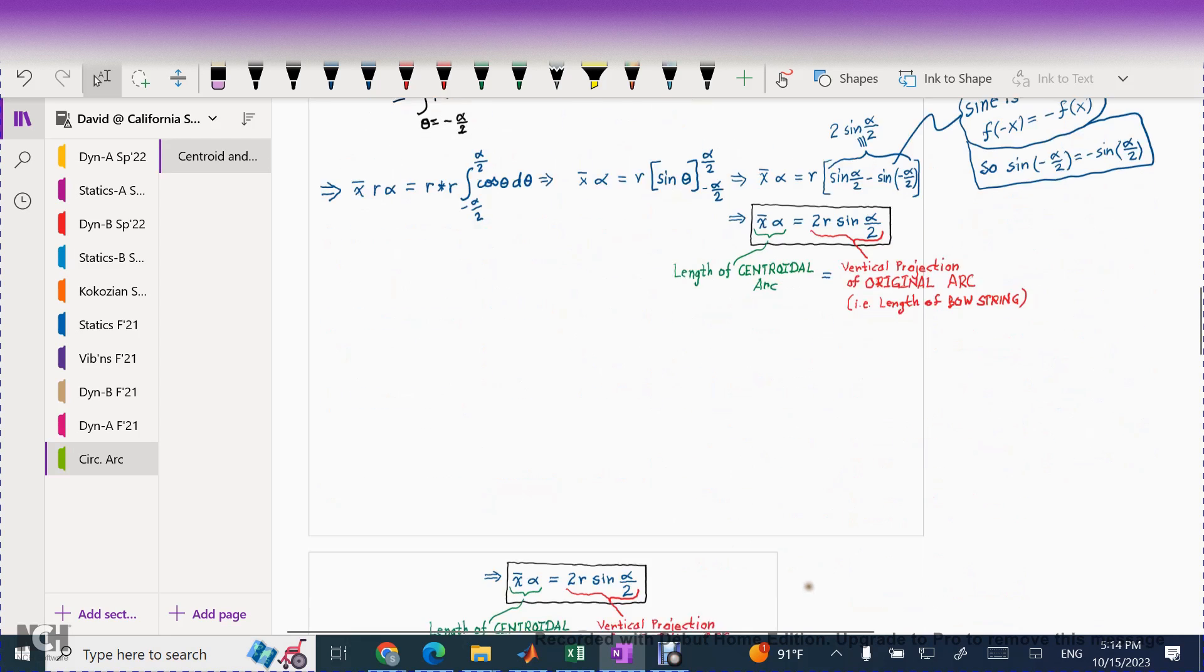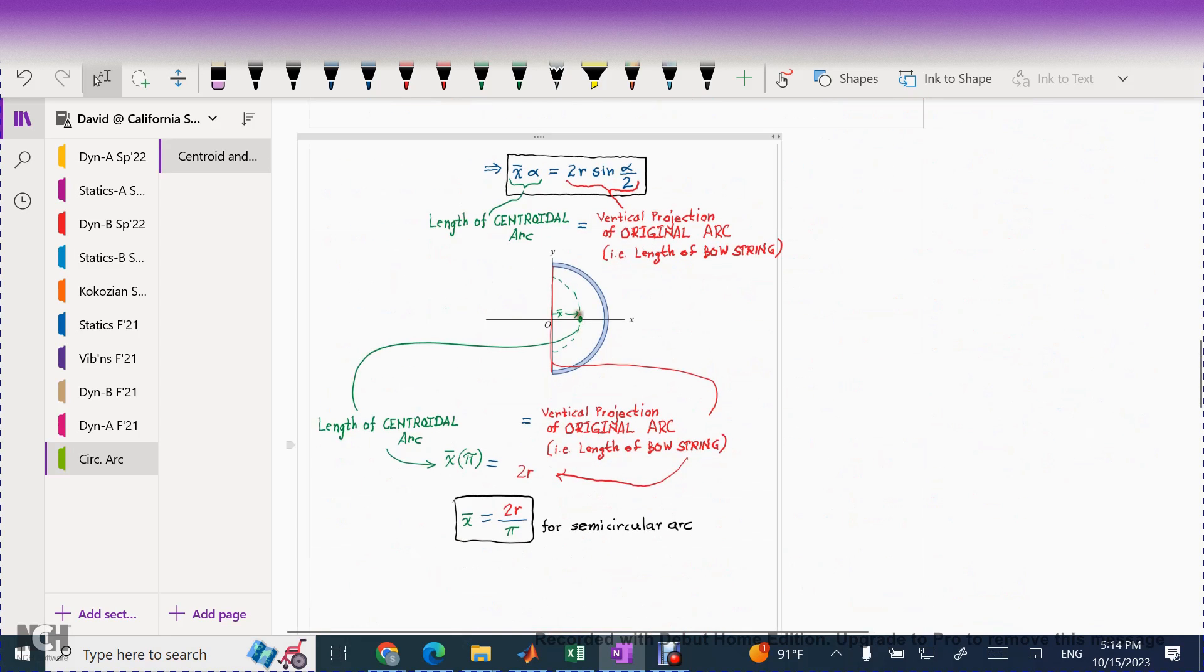Now, let's take that and apply it to a semicircular hoop portion. So if I take a semicircular hoop portion, then let's just go ahead and apply that same idea. The length of the centroidal arc is the x bar, which presumably I don't know at this stage, times the subtended angle, but I do know what angle is being subtended. For a semicircular hoop, it's pi, pi radians, right? It's half of a circle.